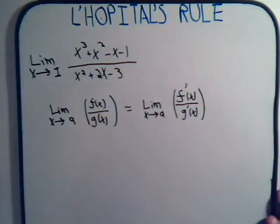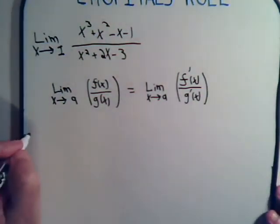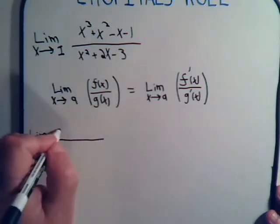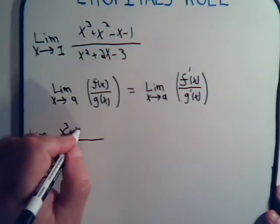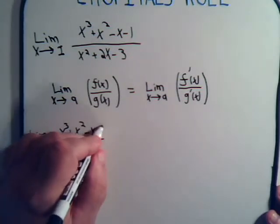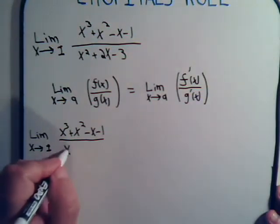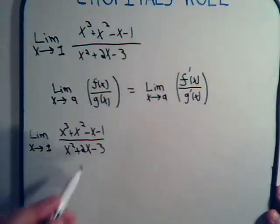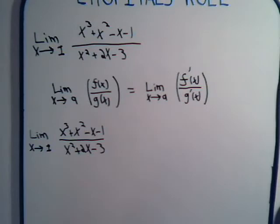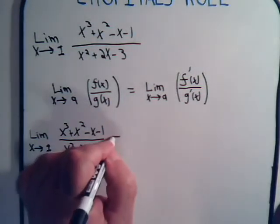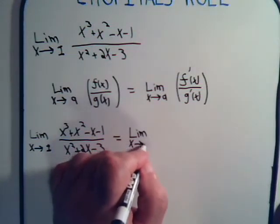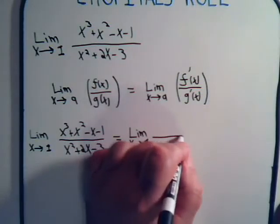So let's go back to our original problem here. Remember, we started off with the limit as x approaches 1 of x cubed plus x squared minus x minus 1 divided by x squared plus 2x minus 3. We'll put x equals 1, that comes out 0 over 0, so that doesn't do us much good. But that will also equal the limit as x approaches 1.